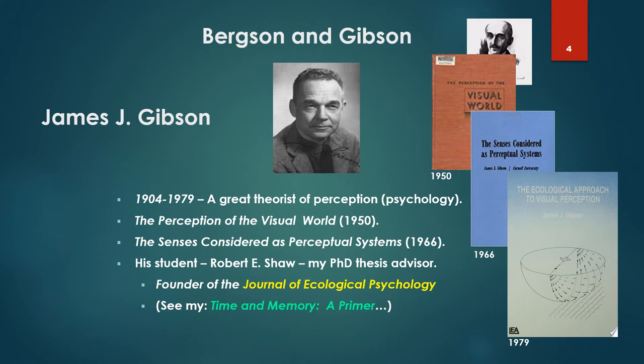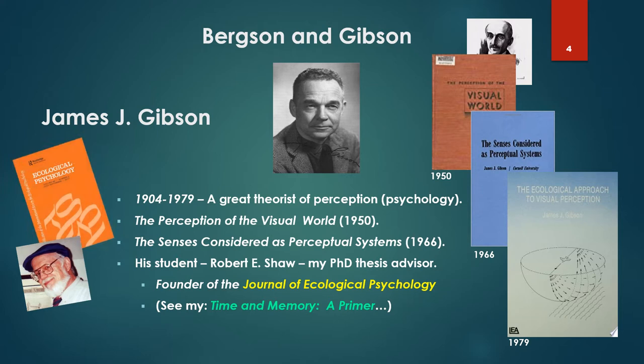Now to Gibson, a great theorist of perception and psychology. His major works pictured there: The Perception of the Visual World (1950), Senses Considered as Perceptual Systems (1966), 1979 The Ecological Approach to Visual Perception. His student Robert E. Shaw was my PhD thesis advisor and was the founder of the Journal of Ecological Psychology. You can see my little book on Amazon, Time and Memory: A Primer, for some of my relationship and work with Shaw. Some stories there, shall we say.